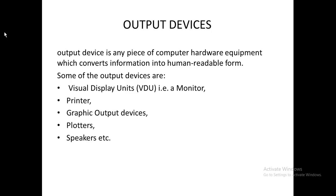These outputs are shown on output devices. Output devices include the printer — we print the information we want and produce a document. We have the VDU, visual display unit, which is the monitor — we can watch and see information on the monitor. We also have graphic output devices, plotters, and speakers, which we use to hear what we've recorded.